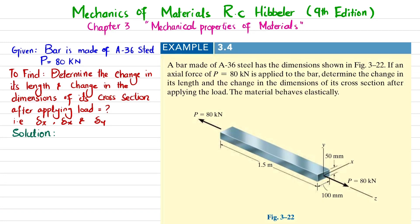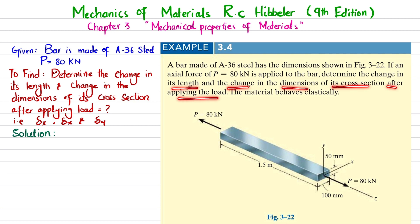In this video we are going to solve Example 3.4, taken from Chapter 3 'Mechanical Properties of Materials' in the book 'Mechanics of Materials' by R.C. Hibbeler, ninth edition. The problem statement is: a bar made of A36 steel has dimensions shown in the figure. If axial force P = 80 kilonewtons is applied to the bar, determine the change in its length and the change in the dimension of its cross section after applying the load. The material behaves elastically.